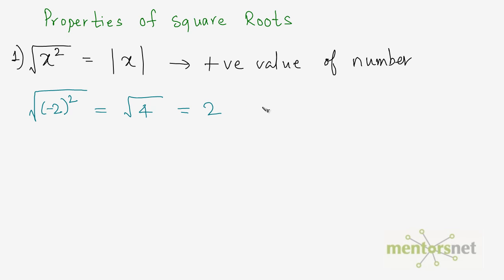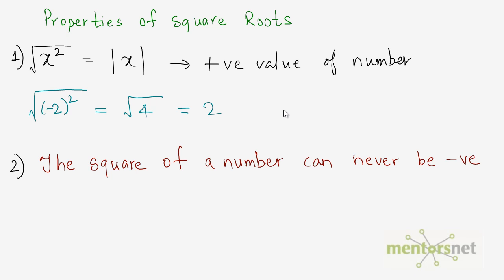Square root of 4 is 2. In this case it is called the principal square root of 4. The principal square root of any number is the positive square root of that number, not the negative one, and we usually take the principal square root in all cases. The second property — a property of squares — says that the square of a number can never be negative. To prove this, minus 3 times minus 3 gives us 9, since minus times minus is plus and 3 times 3 is 9. So the square of any number can never be negative.